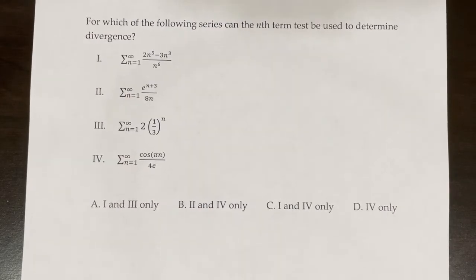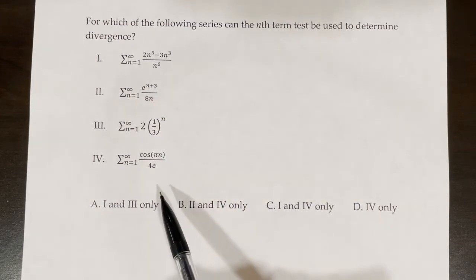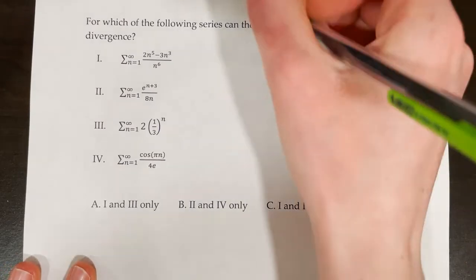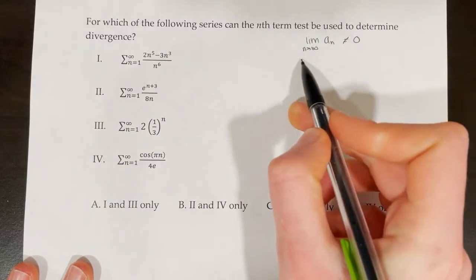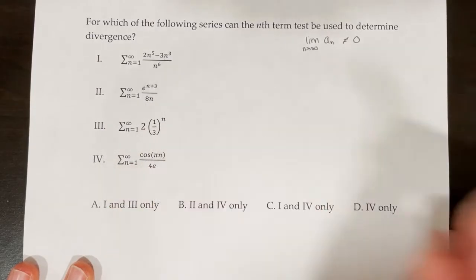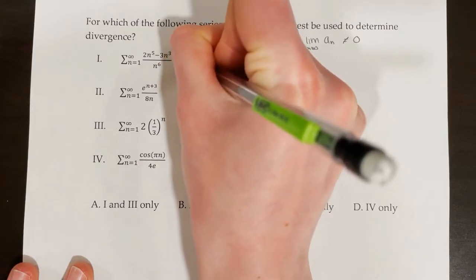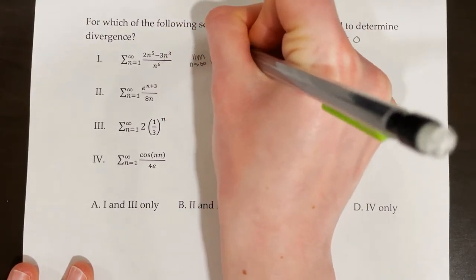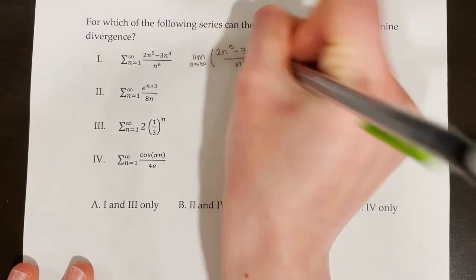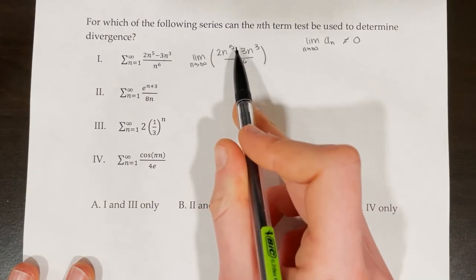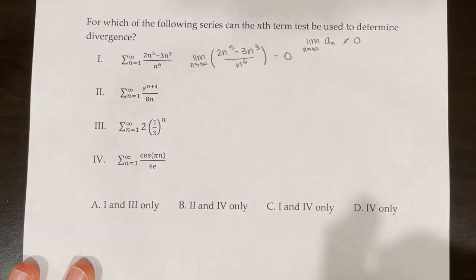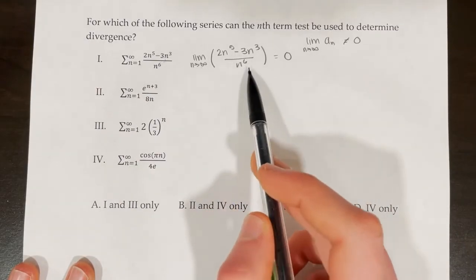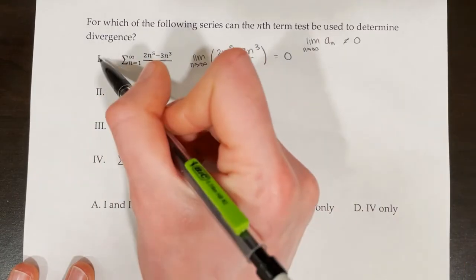For which of the following series can the nth term test be used to determine divergence? We need the limit as n approaches infinity of a sub n to not equal 0. For series 1, the limit of 2n to the 5th minus 3n cubed over n to the 6th approaches 0 since the denominator grows faster — so we cannot use the nth term test. For series 2, the limit of e to the power of n plus 3 over 8n: applying L'Hôpital's rule gives e to the power of n plus 3 over 8, which approaches infinity — not 0.